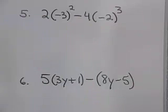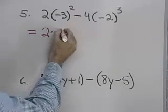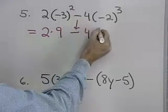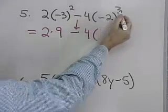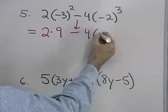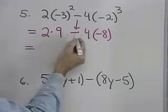Here's another problem. Here I have some exponents. The rule for order of operations tells me I want to simplify the exponents first. I'll do that. 2 times negative 3 squared will be positive 9. Subtract 4 times negative 2 to the third power will be negative 2 times negative 2 times negative 2, which will be negative 8.